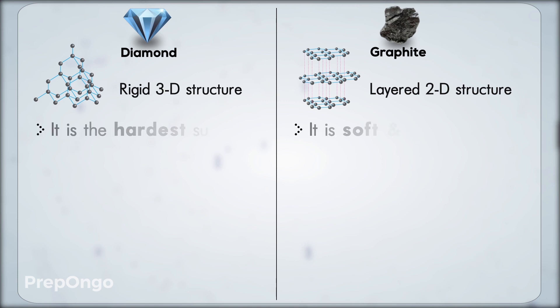Diamond is the hardest substance known whereas graphite is soft and greasy which makes it useful as a lubricant in heavy machineries working at high temperature.